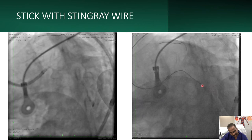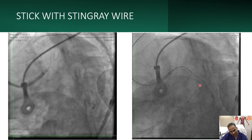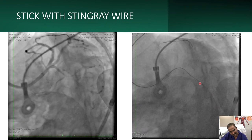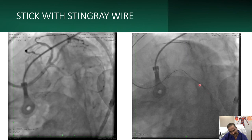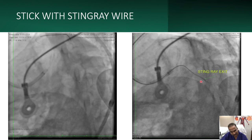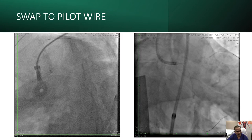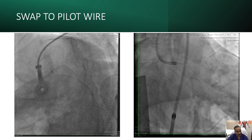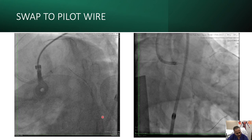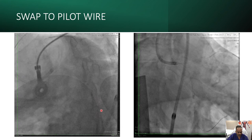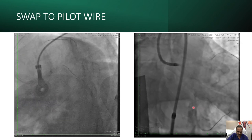We then advance the Stingray wire to give a stick. You can see one exit — proximal to the proximal marker — going into the lumen. This is the proximal marker; this is the distal marker. The Stingray wire just entered into the lumen from this exit. Once entry was created, we swapped to a Pilot 50 wire, which went easily off the Stingray exit into the true lumen. A check angio confirmed the wire is in the true lumen.